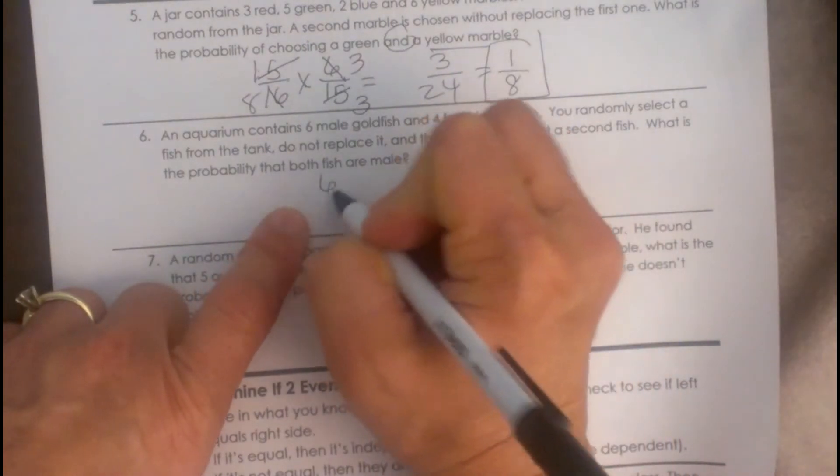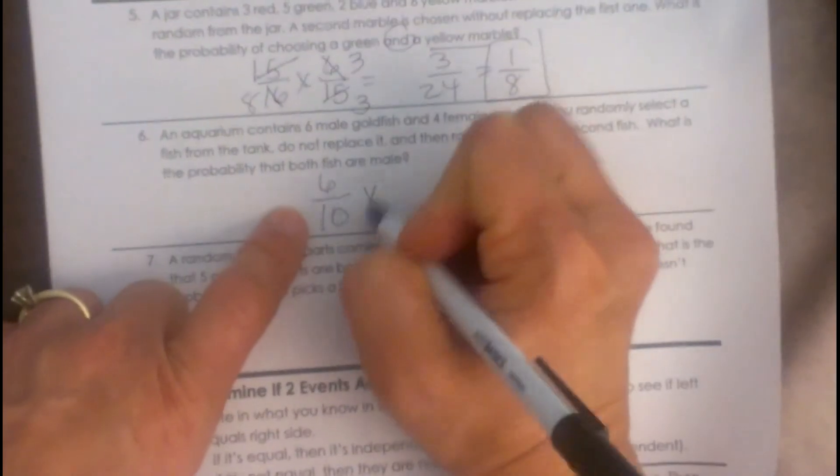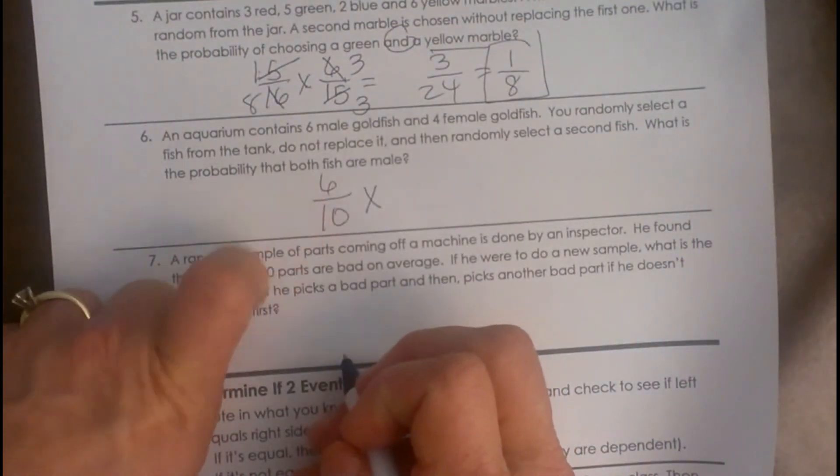Okay we have 6 out of 10 on the first try. That one is easy. 6 tenths. The second try though, we have to assume we chose one of those.